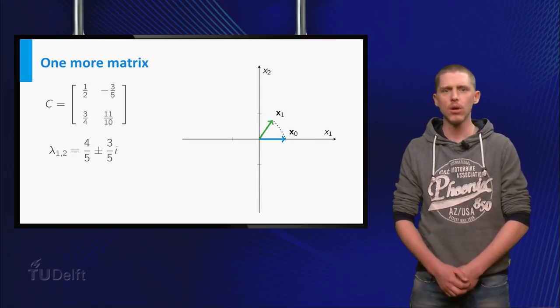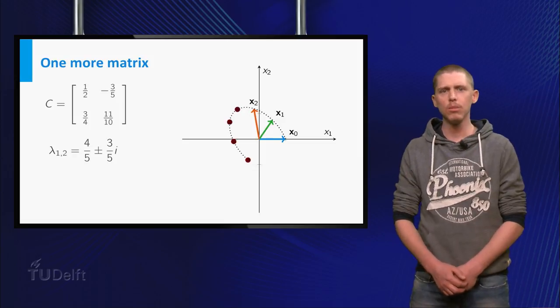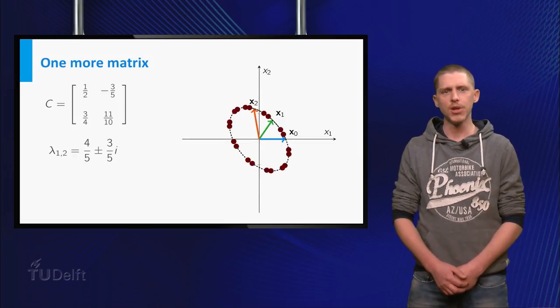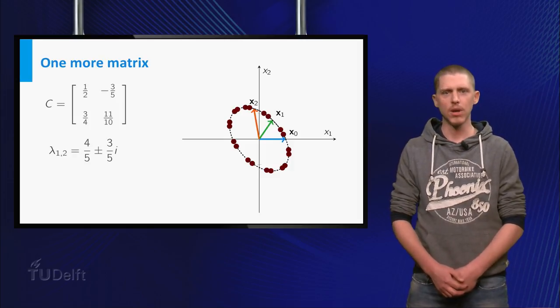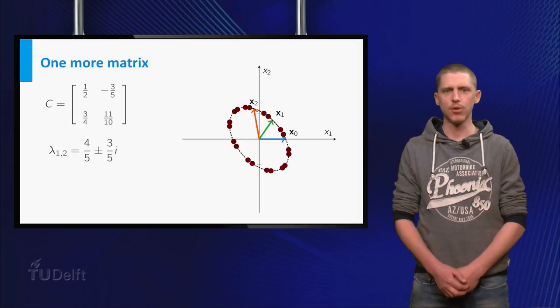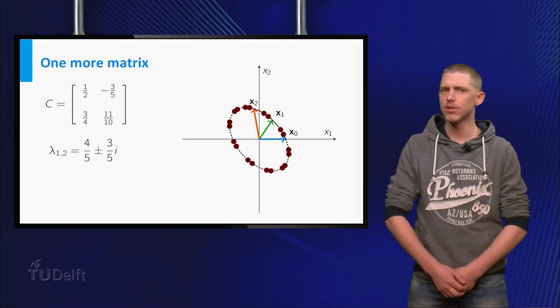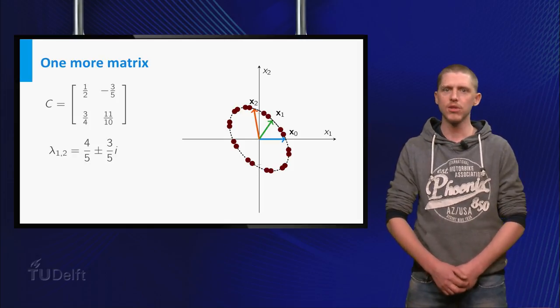If you start again with the vector and repeatedly multiply by C, you see this special pattern emerging. The ellipse emerging from repeated multiplication of a vector by C is similar to a circle. Could this mean that C is related somehow to a pure rotation matrix?